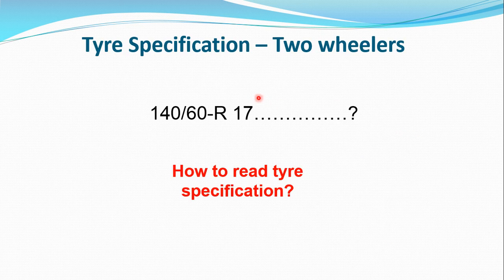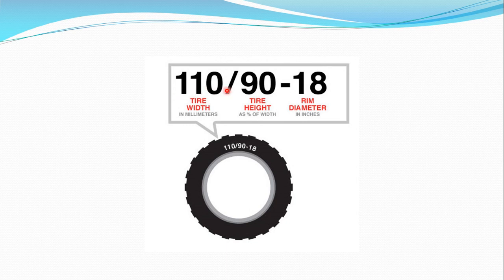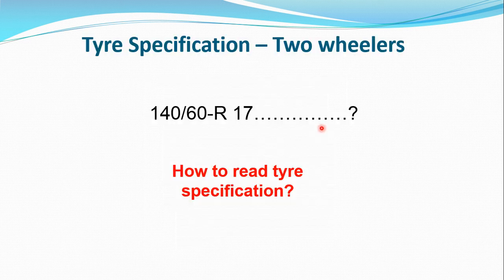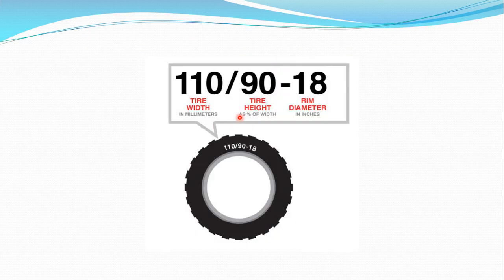For two-wheelers, a coding like 140/60-R17 is used: '140' represents the tyre width, '60' represents the aspect ratio (tyre height as a percentage of width), 'R' represents radial construction, and '17' represents the rim diameter in inches (17 inch, 18 inch, etc.). We will continue in the next lecture covering the various tyre mechanics in detail.